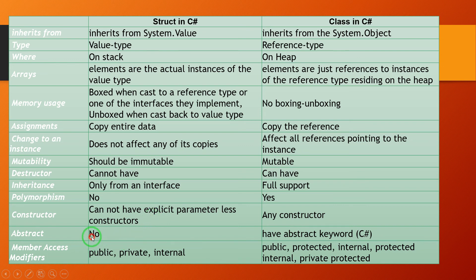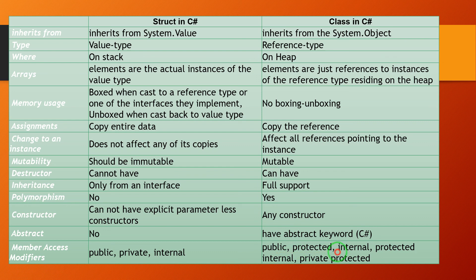For abstract: there is no abstract concept available in struct, whereas class supports the abstract keyword in C#. For member access modifiers: struct supports public, private, and internal. Class supports public, protected, internal, private, and protected. These are the differences between struct and class in C#.